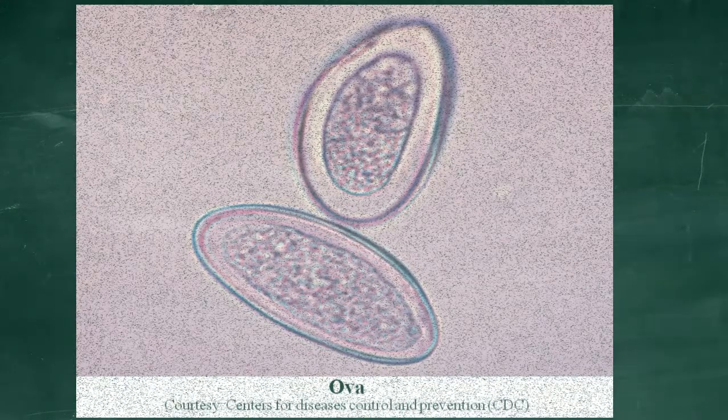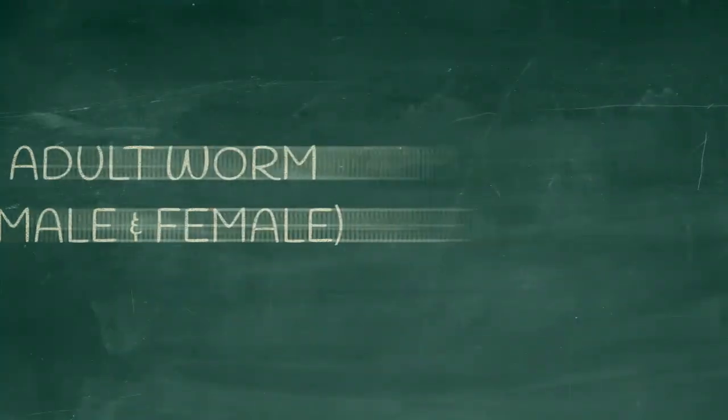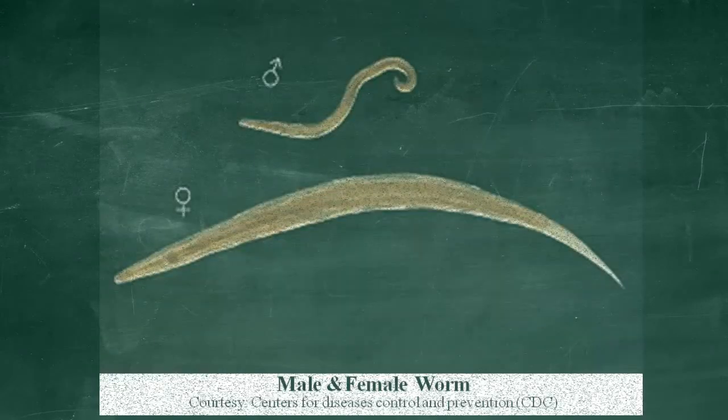In this picture you can see the ova size and double layer of the axial. Adult worm. You can see the size and posterior end of the male and female adult worm.